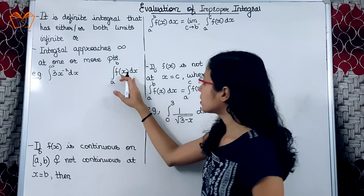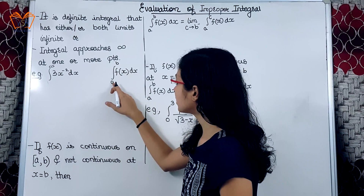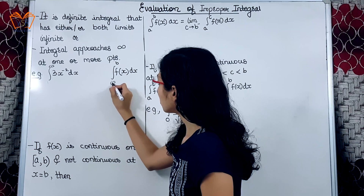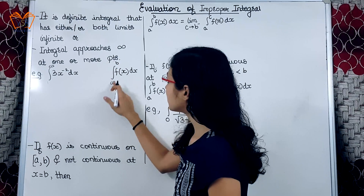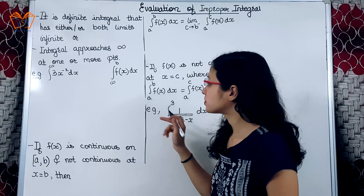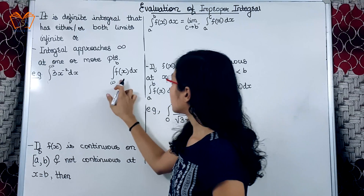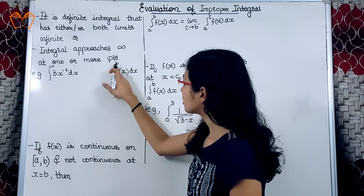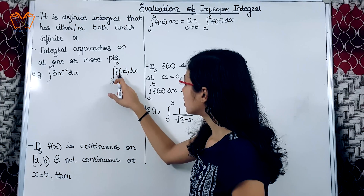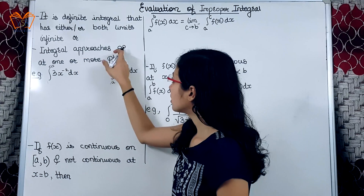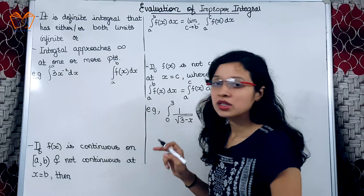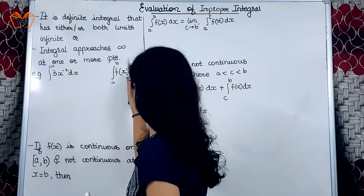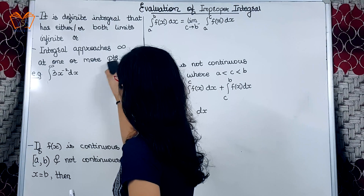Now, the improper integral is a form of definite integral, but one or both of the limits are equal to infinity. If both limits are specified, then at either point a or b, the result of the function will be equal to infinity. We will understand the first definition through an example.